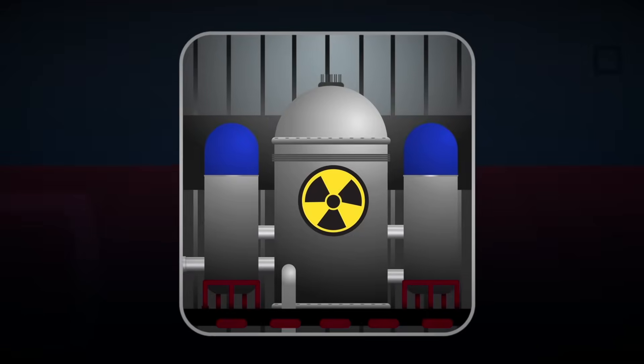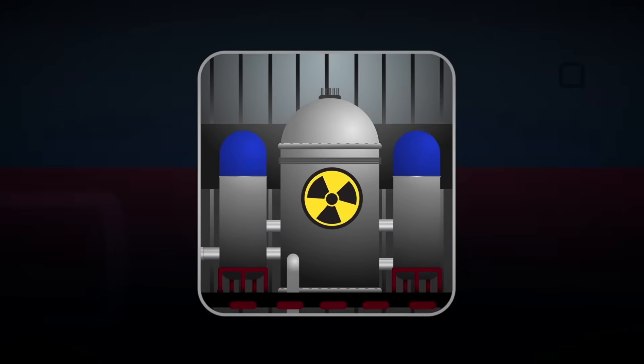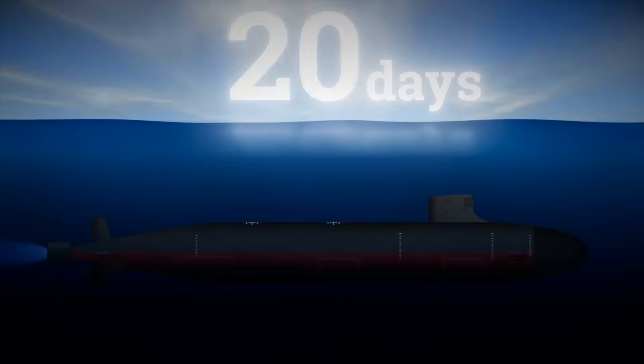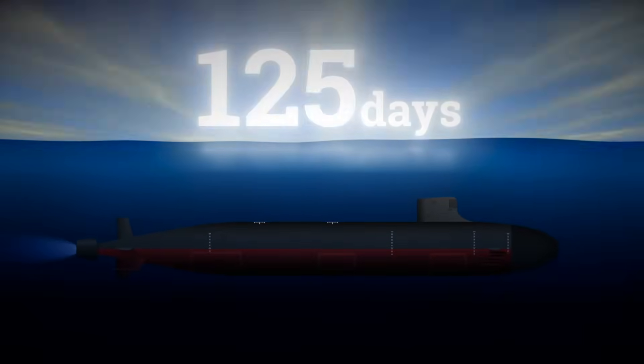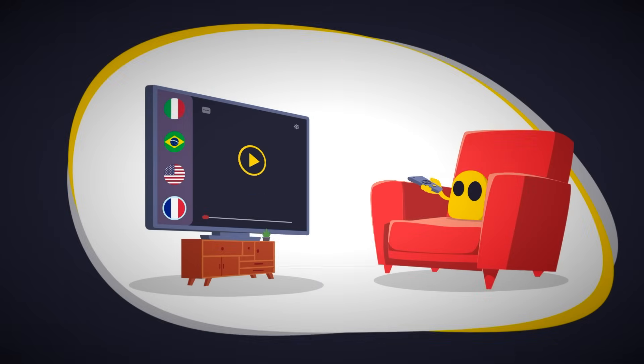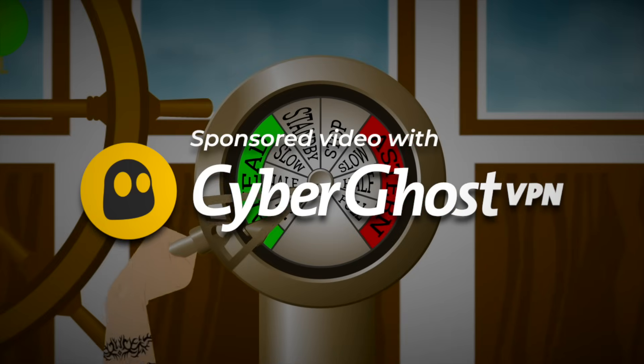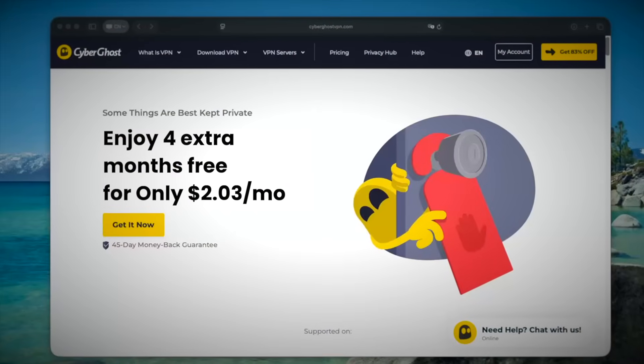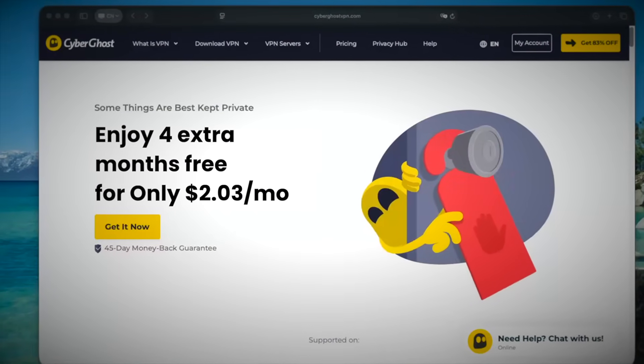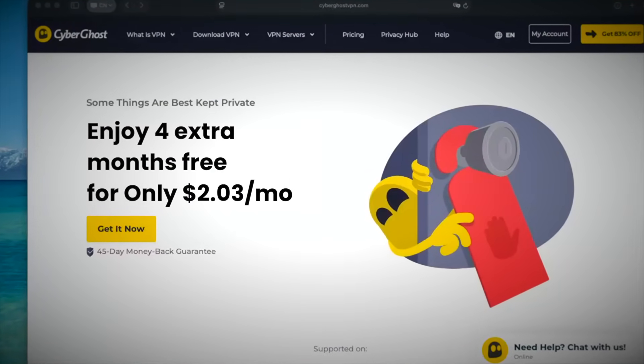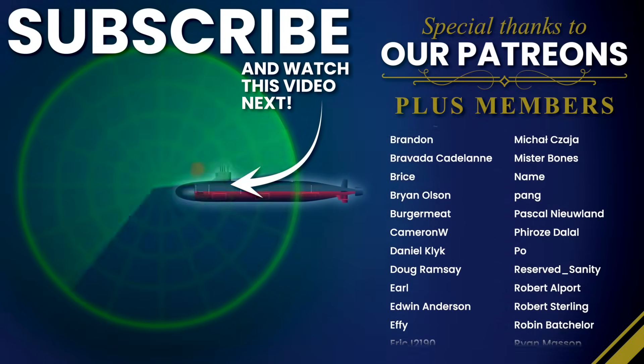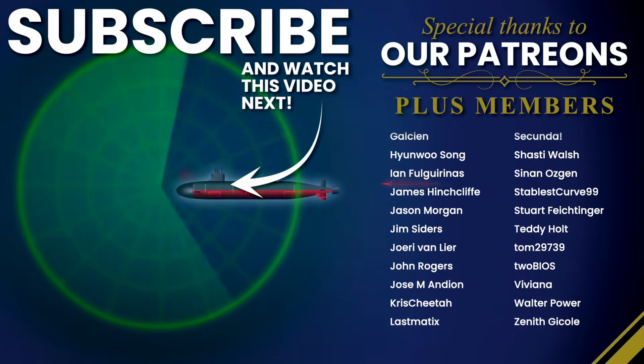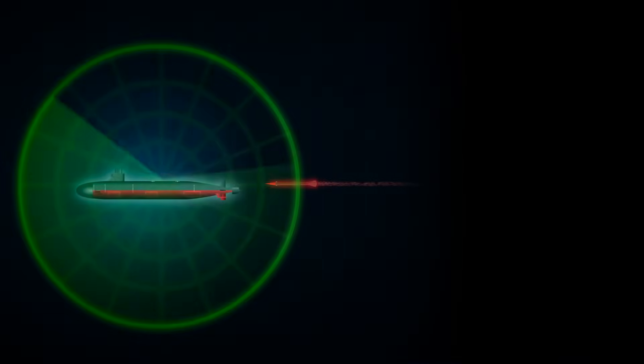Of course, the ultimate stealth machines are the nuclear subs that can stay hidden for months at a time. To find out more about them, subscribe and stay tuned. Just a quick reminder, CyberGhost VPN is still running this fantastic offer. $2.03 a month, 4 months free, and 45 days to try it risk-free. Protect your privacy, stream from anywhere, and stay invisible online. The link's down below. Thank you to all our patrons, and see you next time.